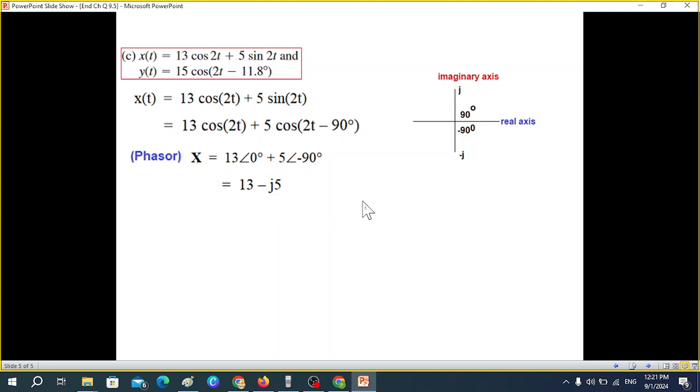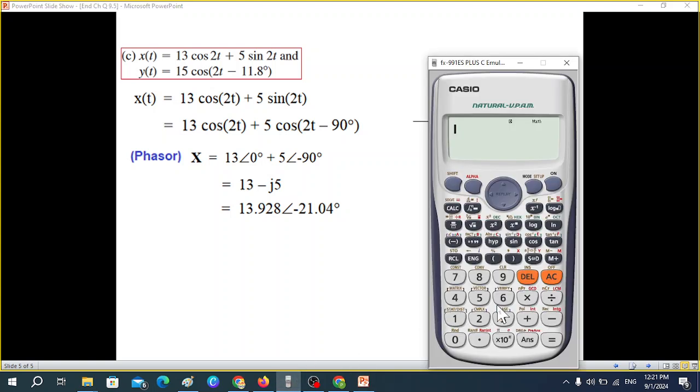I hope you have learned by now the polar and rectangular form. Let me show you what we need to do from here. We need to find its magnitude and angle. Take your calculator. And very simple. You just write, this is in rectangular form, we have to convert into polar. We go to shift, this is polar button. Pol(13, shift comma, minus 5, bracket close, equal sign. So this is the magnitude 13.92 and the angle is minus 21.04°.